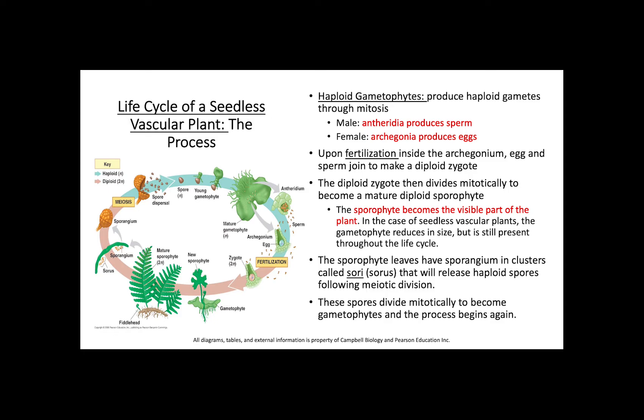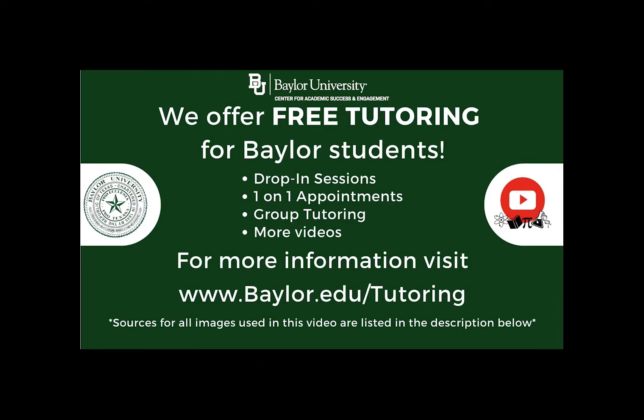The sporophyte leaves have sporangia in clusters called sori (singular: sorus) that release haploid spores following meiotic division. These spores then divide mitotically and become gametophytes, and the process begins all over again.